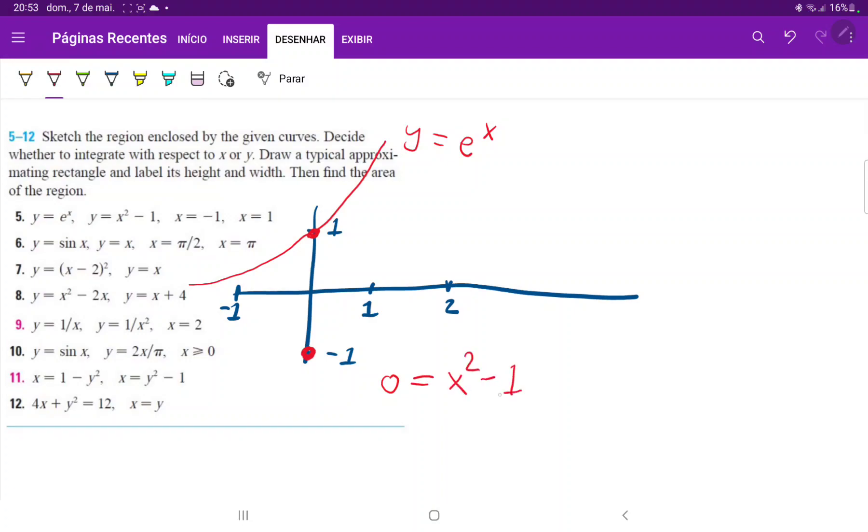Setting it equal to zero: zero equals x squared minus one. Factoring using difference of squares, I can see that x equals one and x equals negative one. These are the roots, and I'll draw it in a different color.